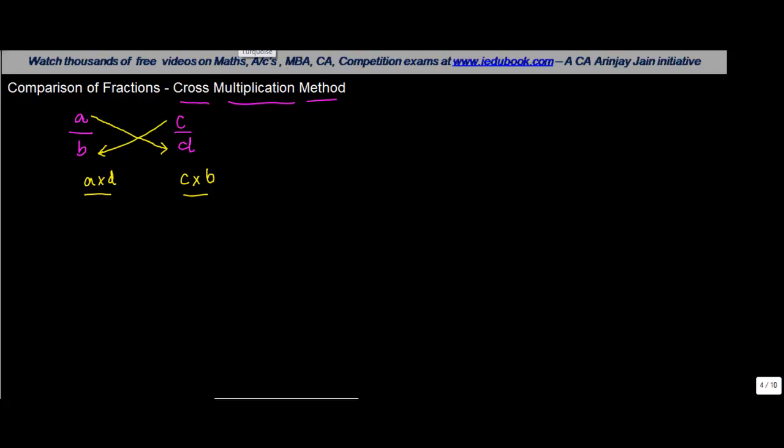The first one is that a into d is greater than c into b. I have not specifically written this as b into c because I am assuming that c is on the second denominator so I am just keeping that in front here. If a into d is greater than c into b...